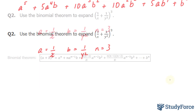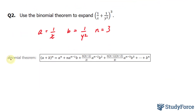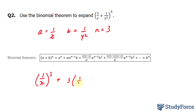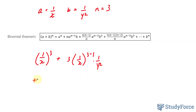Once again, we'll start off with the first term. For simplicity's sake, I've reapplied the binomial theorem here. a to the power of n: one over x to the power of three — that's your first term. Plus n — three — times a to the power of n minus one. Remember your a was one over x, to the power of three minus one, which is two. Times b: one over y squared.